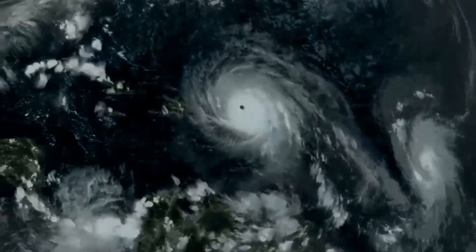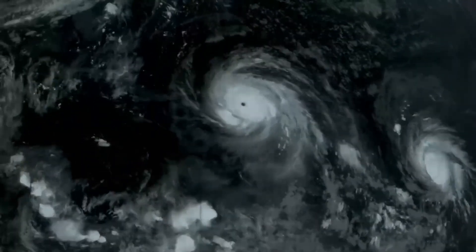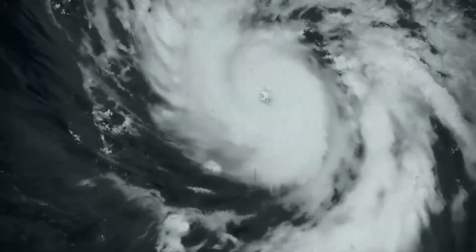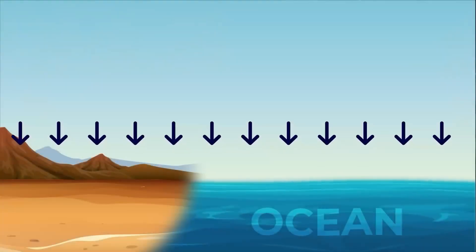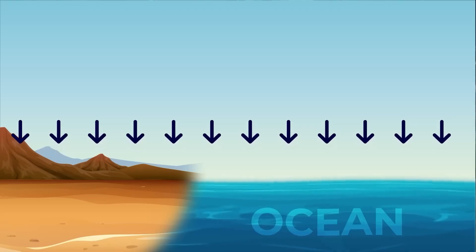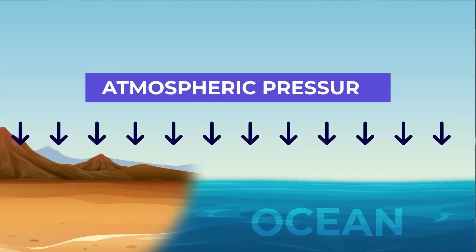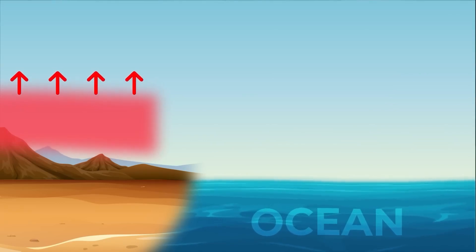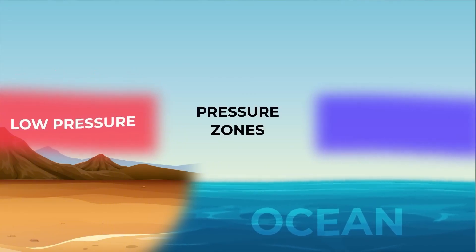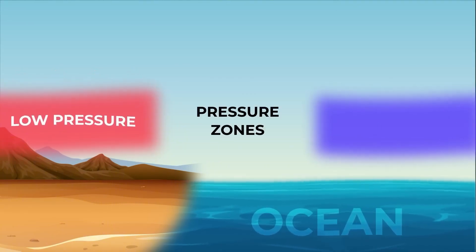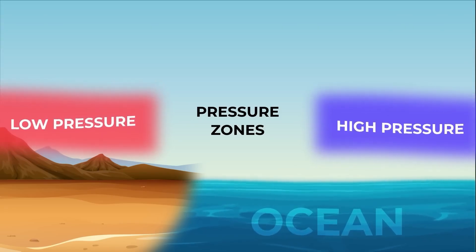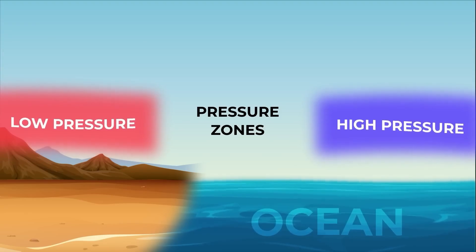The formation of the cyclone is a complex meteorological phenomenon in which atmospheric pressure plays a very important role. The force or pressure exerted by the air on the Earth's surface is called atmospheric pressure. When the air in a particular place gets warm, it rises vertically, resulting in a shortage of air and creating a low pressure zone. Similarly, in cold areas, the air sinks downward, resulting in accumulation of air and creating a high pressure zone.